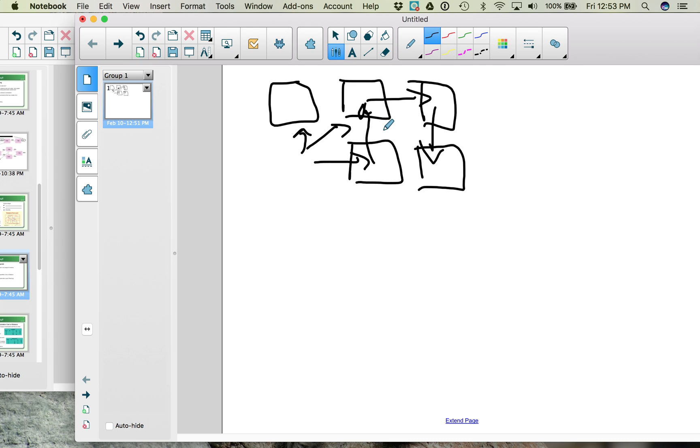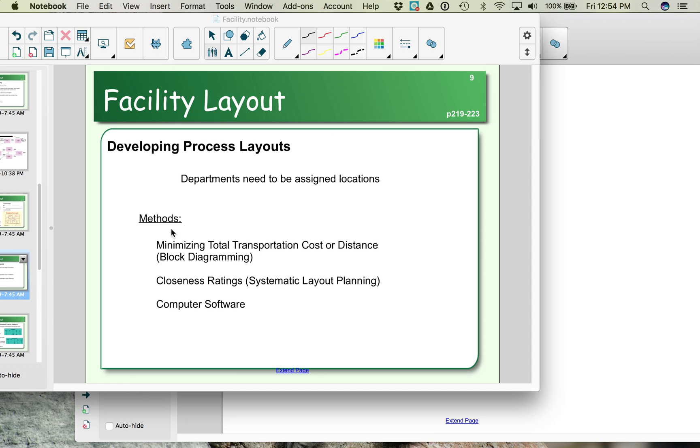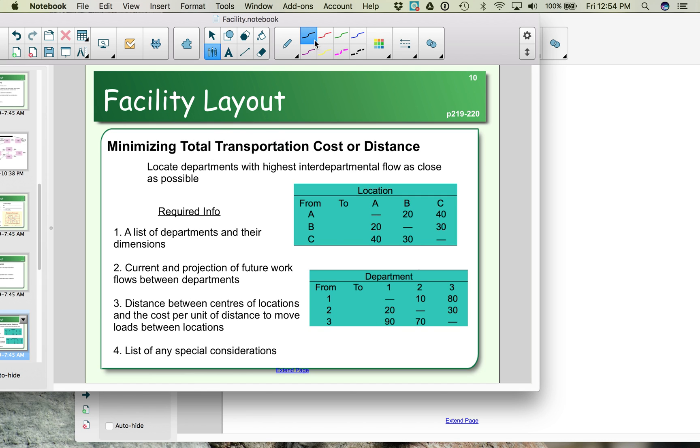This is especially beneficial if you have services or variation in the different products you're producing. Whereas the product layout is used when you have standard production and everything is essentially being produced the same way. We're moving the materials in order to each workstation based on the steps in the production process. When you have the process layout, we need to figure out where we're going to put these different departments. The first method we're going to look at is minimizing total transportation cost or distance. This is also called block diagramming. In this case what we're doing is we are looking at the workflow that goes between different departments and locations.